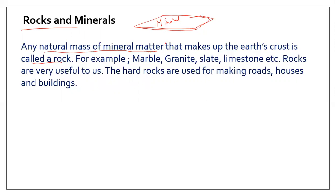Rocks contain different types of minerals. Examples of rocks include marble, granite, slate, limestone, and so on. These rocks are very useful. Hard rocks are used for making roads, houses, and buildings — for example, materials like cement come from rocks.